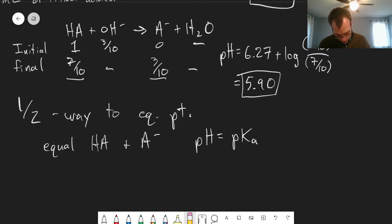our log term, we're going to have 5 out of 10 over 5 out of 10, and this term is going to go to zero. So at that point the pH is equal to the pKa.